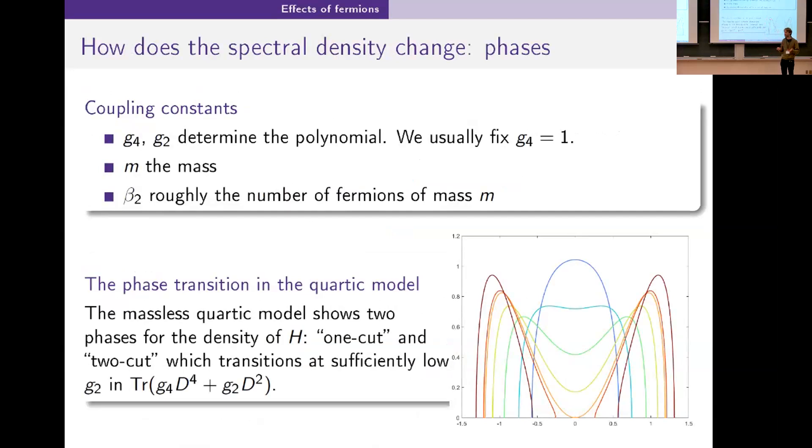I have them plotted here and one of the interesting phenomena that we see in this model is there's a phase transition where the support of the spectral density splits into two. We start out with this blue curve here in the middle which has support between roughly minus a half and plus a half.